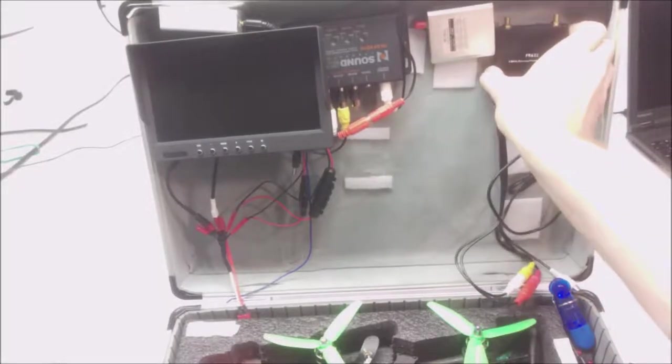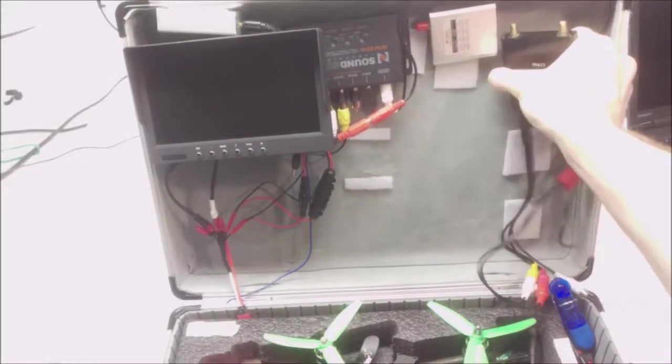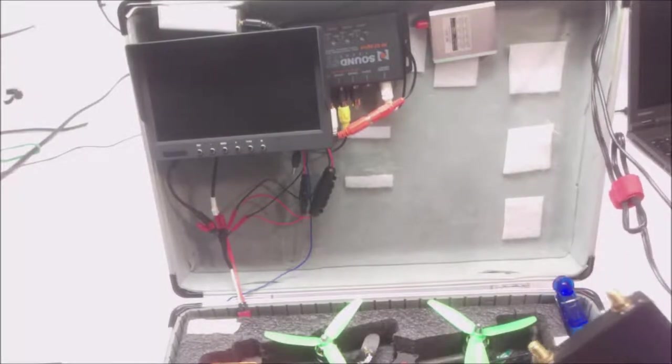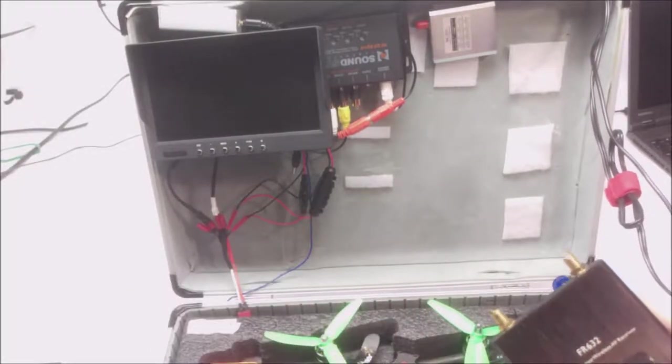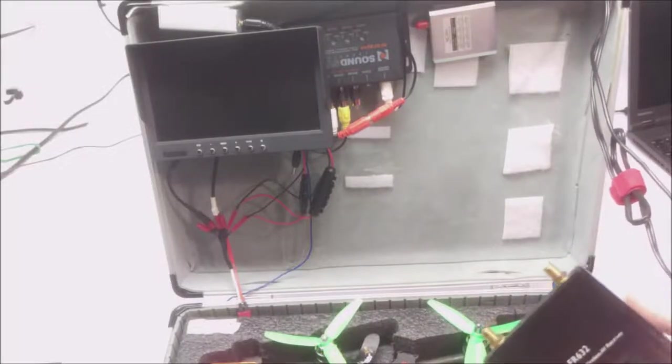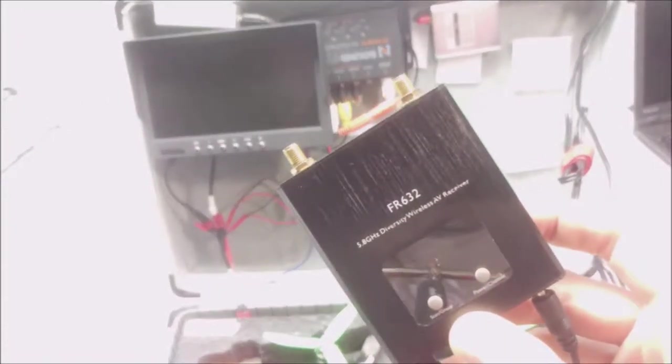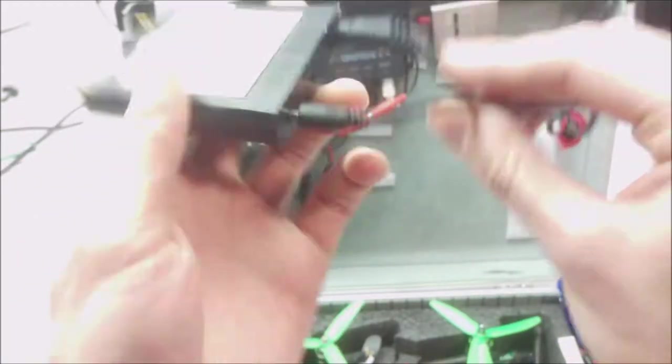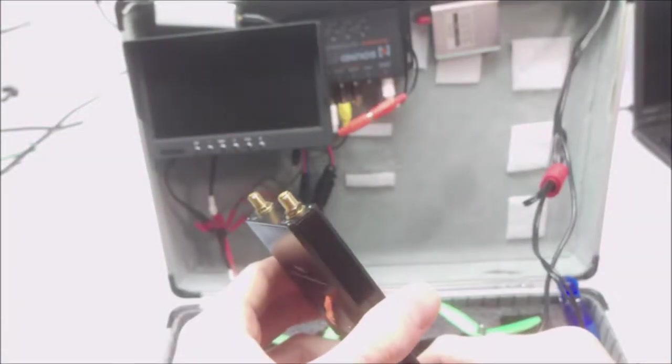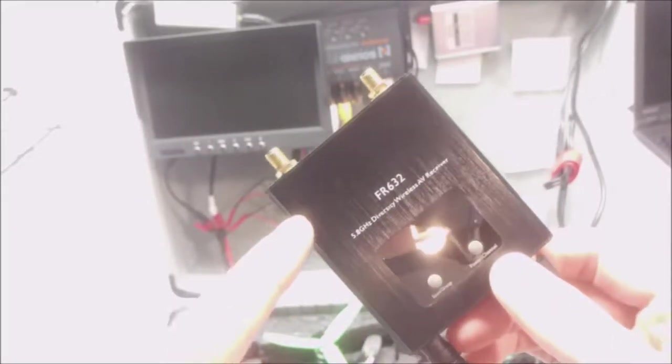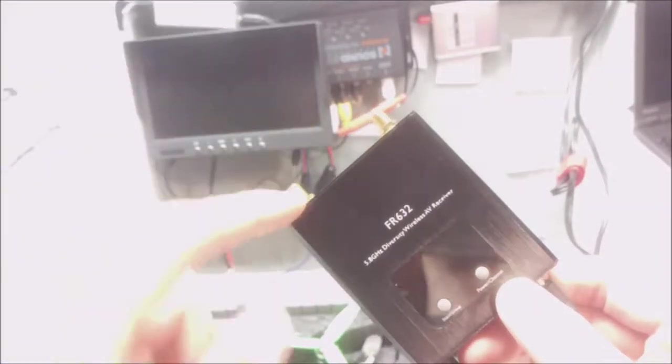So I put this stuff in here with Velcro, this is my receiver. Obviously I have the receiver in the goggles, but the performance on that is spotty, especially if you like to fly through anything somewhat dense, which I do. So this is a diversity receiver. FR632, I can't think of the brand, BossCam I think. Got this off Banggood, again in the description I'll put that.